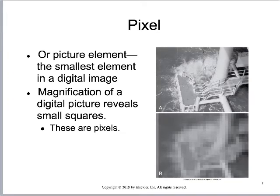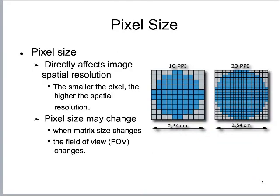Pixels are the very tiny things we use to represent digital data. We're using digital imaging signals, and a pixel is that element with a discrete digital value. It is the smallest possible component of a digital image. If you magnify the illustration from the textbook, you can actually see what those pixels look like. Pixel size is very influential to what the human eye can see, and it is directly related to the amount of spatial resolution or detail in the image — the smaller the pixel, the higher the spatial resolution.